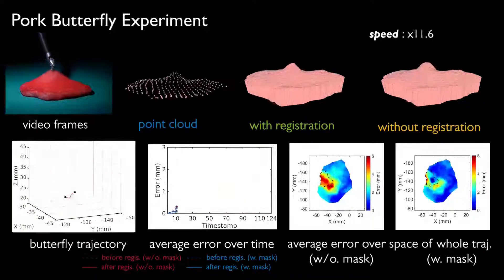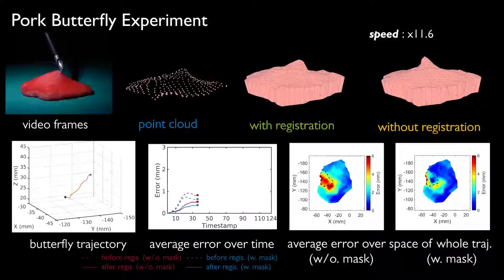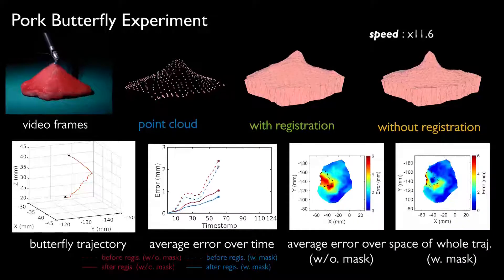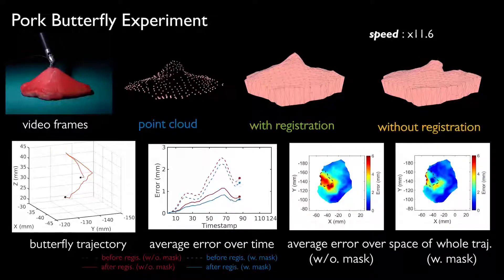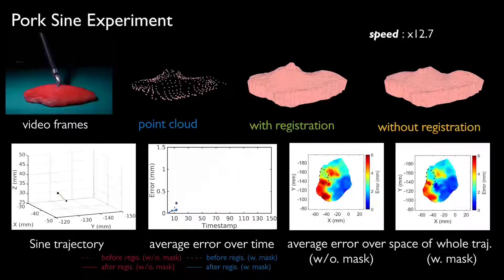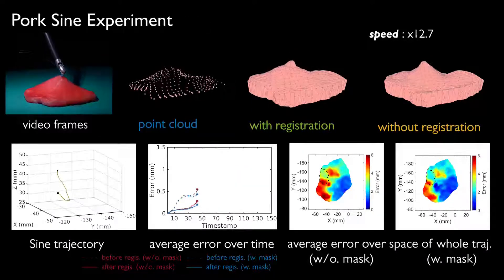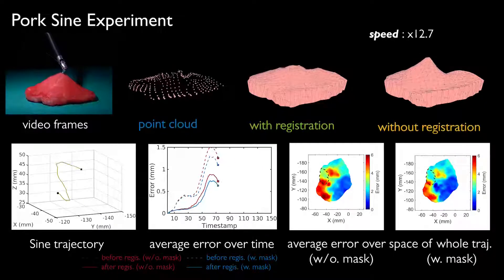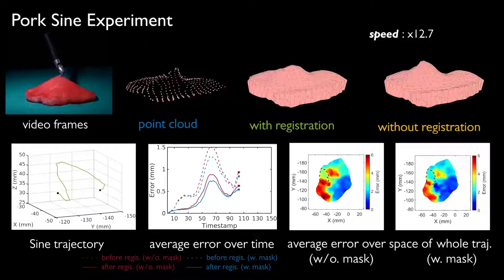In conclusion, our real-to-sim registration method is able to provide a crucial link between the volumetric position-based simulation and the 3D visual perception. It can also improve the reconstruction accuracy in occluded regions by considering dynamics.